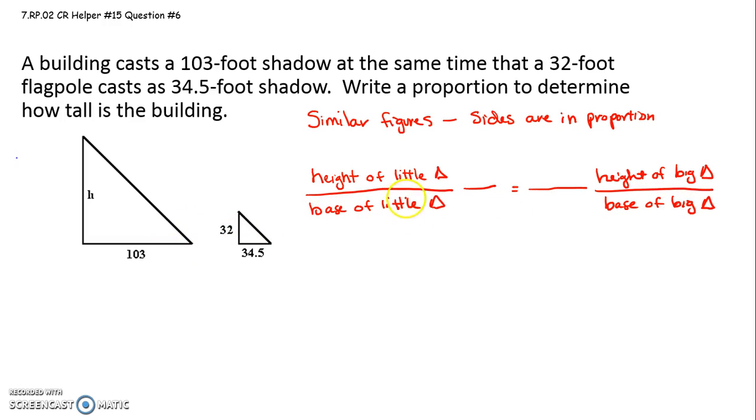Okay, so that's what it means for the sides to be in proportion. And again, there's lots of comparisons we could do, but I can do little to little, big to big. If I'm going to do height of the little on top, then the height of big has to be on top of the ratio on the right-hand side.